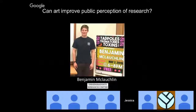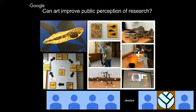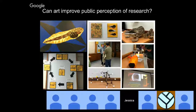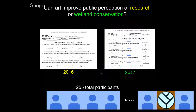Benjamin McLaughlin has been addressing the question: can art improve public perception of research? He created two art shows with wetland-themed artwork covering disease ecology and toxicology — similar to the research I've described. He invited people to visit and fill out surveys. In 2016, he asked how art improves public perception of research; in 2017, he focused on how art improves public perception of wetland conservation. We've had 255 total participants.